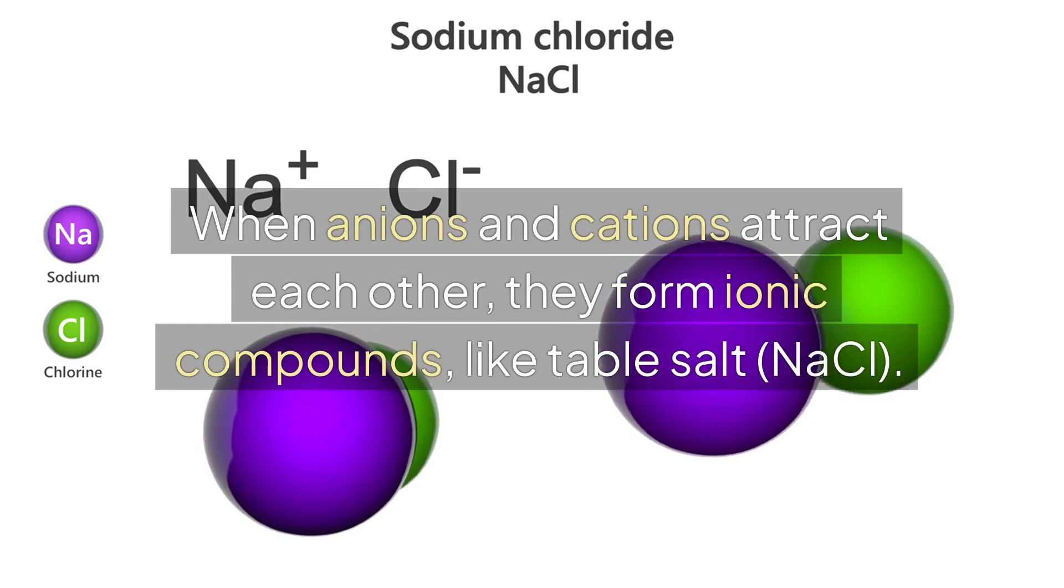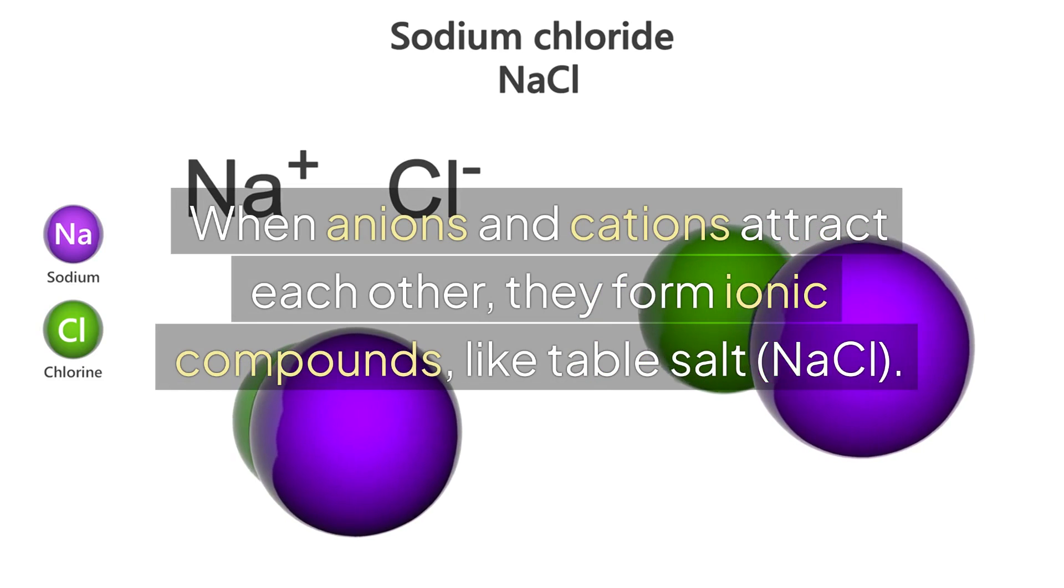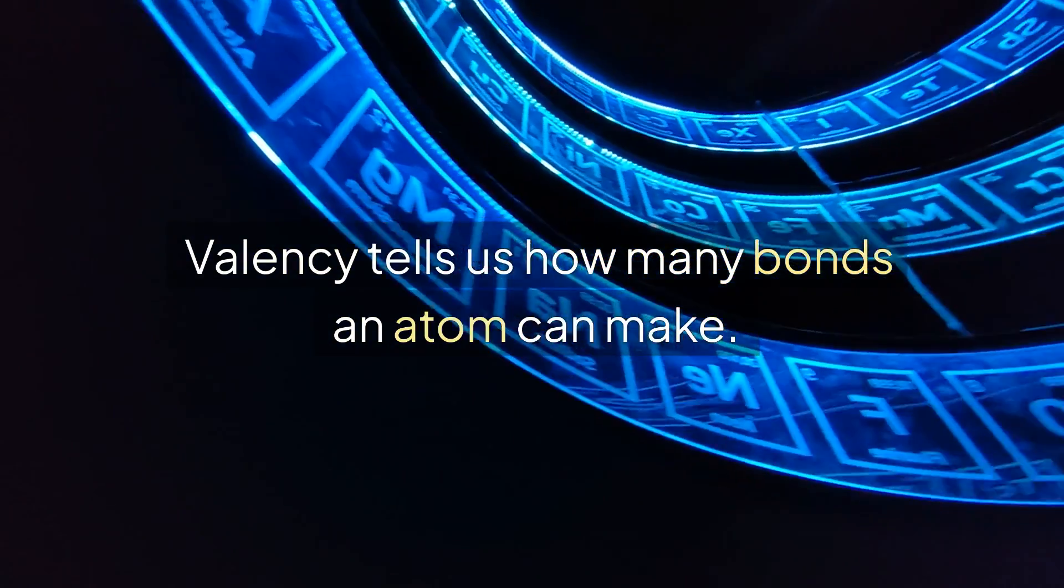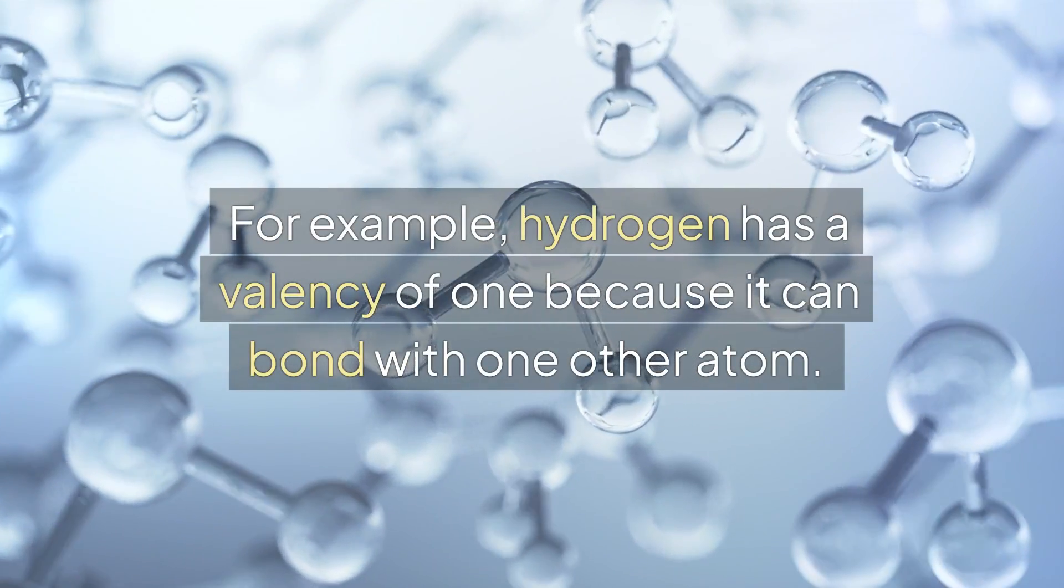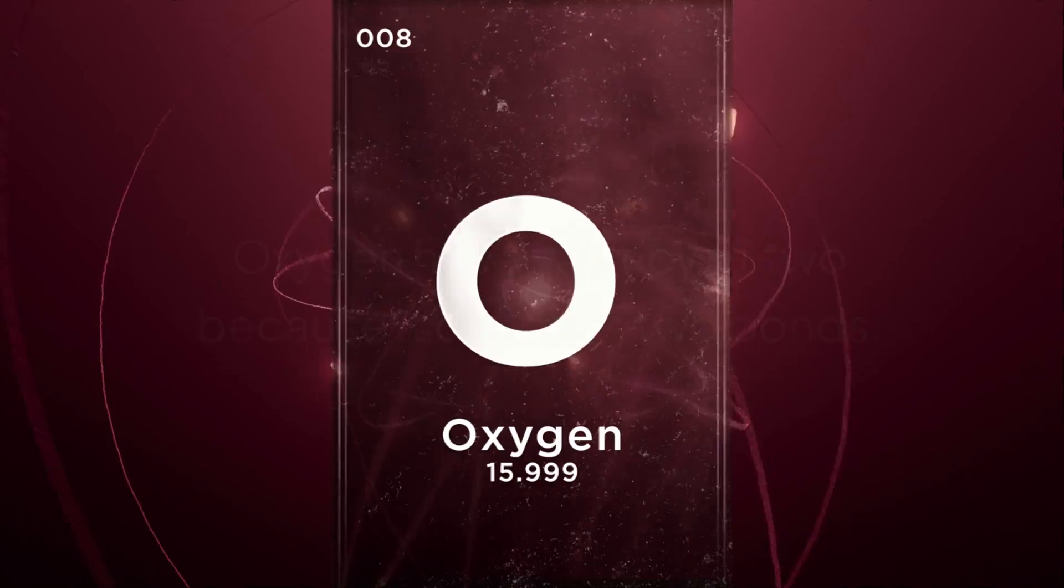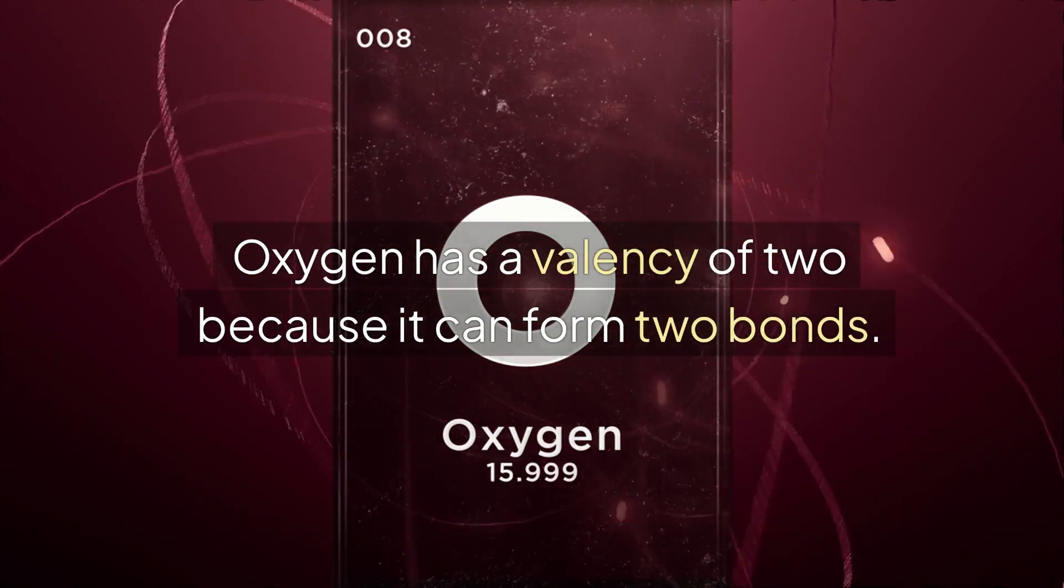When anions and cations attract each other, they form ionic compounds like table salt, NaCl. Valency tells us how many bonds an atom can make. For example, hydrogen has a valency of one because it can bond with one other atom. Oxygen has a valency of two because it can form two bonds.